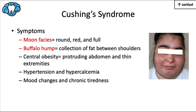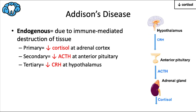Symptoms of Cushing's syndrome — whether exogenous (most common) or endogenous — include moon face (a round, red, full face), buffalo hump (a fat collection between the shoulders), central obesity with a protruding abdomen and relatively thin extremities, hypertension, hypercalcemia, mood changes, and chronic tiredness. All of this is due to too much cortisol.